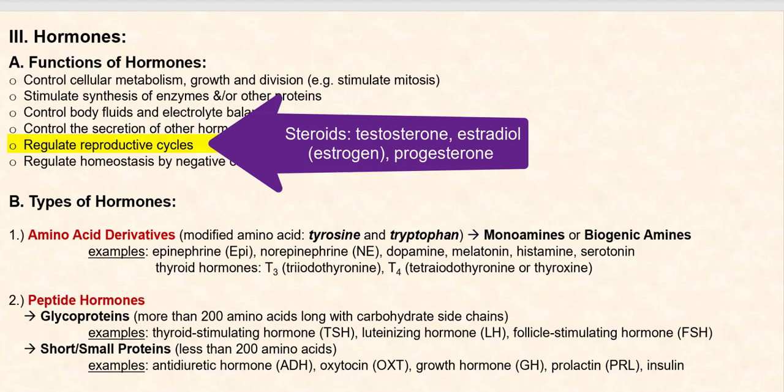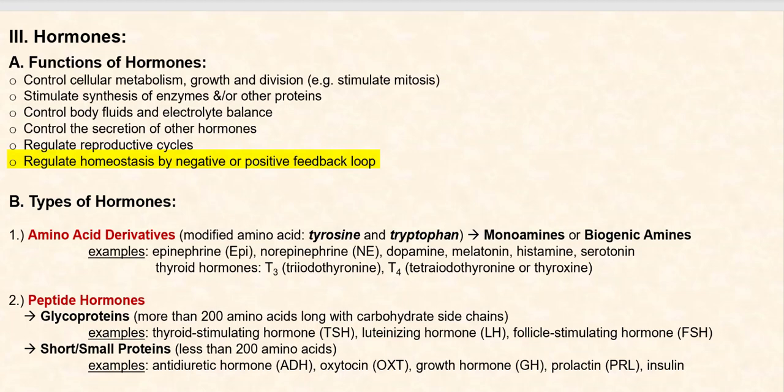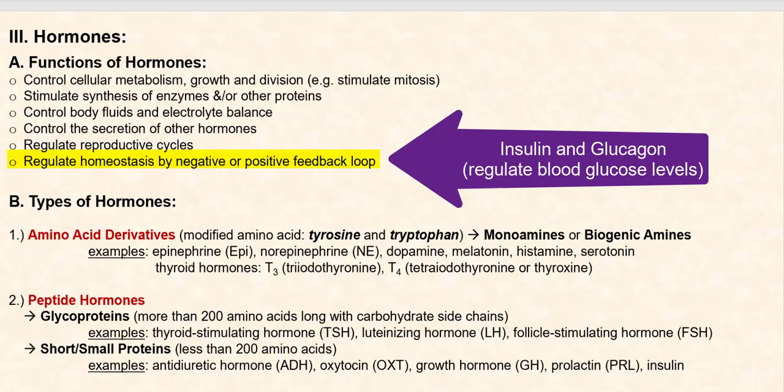Another function is they regulate reproductive cycles. Examples of these would be your steroids: testosterone, progesterone, and estrogen. The last function is they regulate homeostasis by negative or positive feedback loop. Examples would be insulin and glucagon, which regulate blood glucose levels.